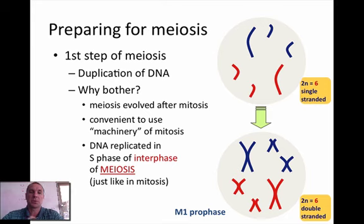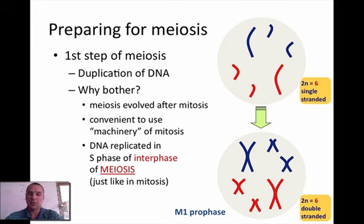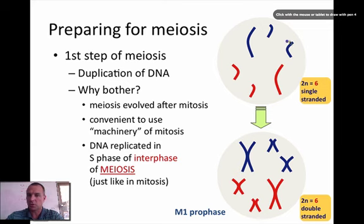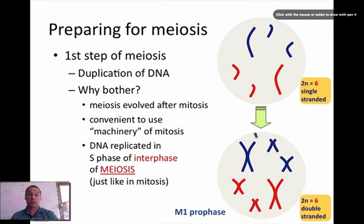The first step of meiosis is the duplication of the DNA during interphase. This happens because meiosis evolved from similar machinery as mitosis — the DNA is replicated in the S phase of interphase, just like in mitosis. So we start out with 6 chromosomes — 3 red, 3 blue — and we end up with a 2N number still of 6, but they're double-stranded: 2 blue, 2 blue, 2 blue, 2 red, 2 red, 2 red — a total of 12 individual chromatids, but 6 pairs.